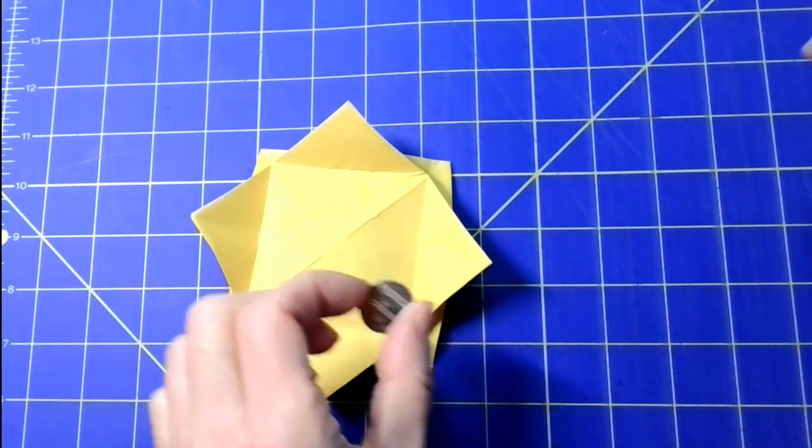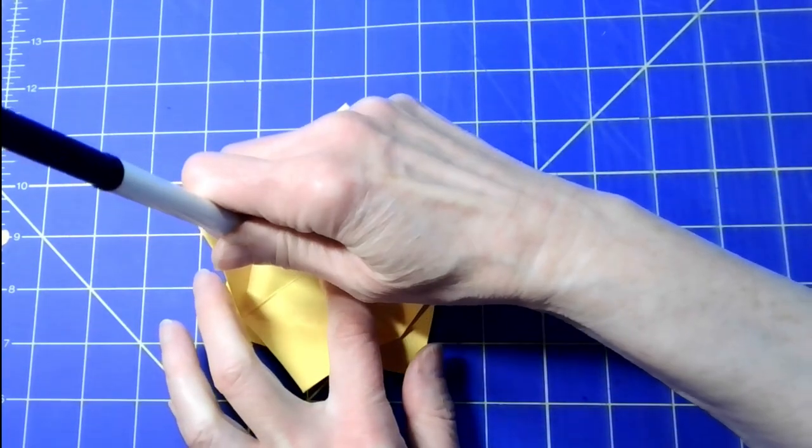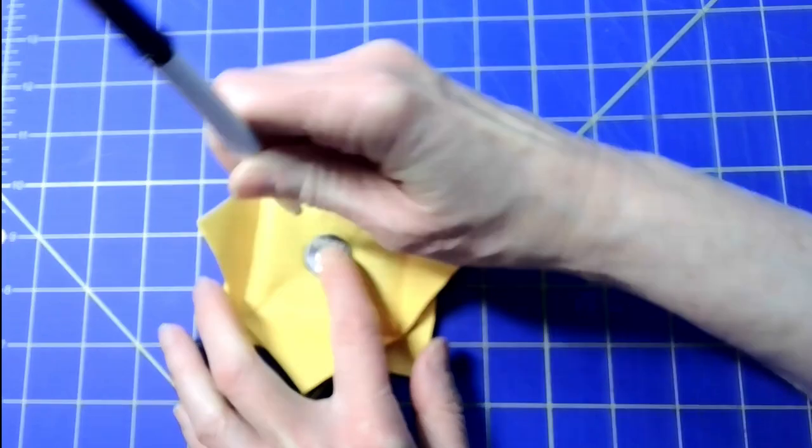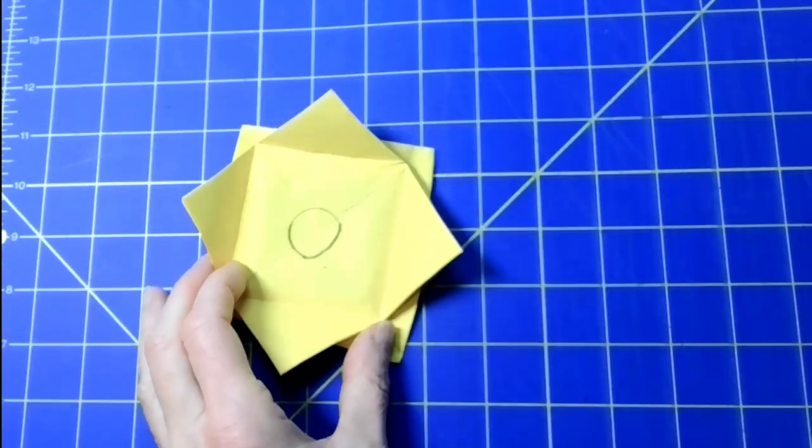Take the battery and place it in the center of the square. Trace around it, then set it aside for later.